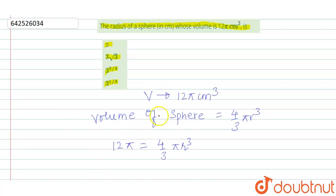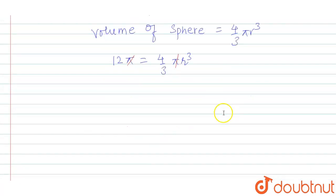Now, we can see that we can cancel this pi and this pi. Also, we can further simplify it and we get 9 equals r cube.